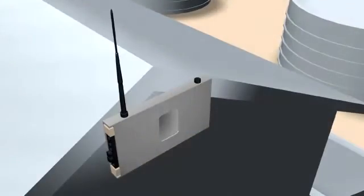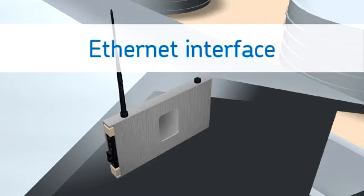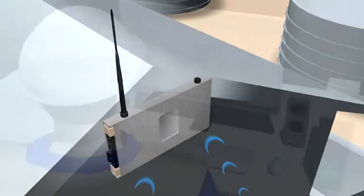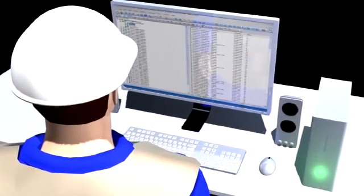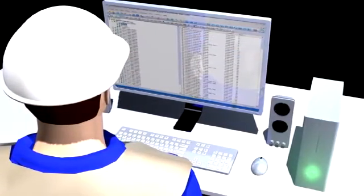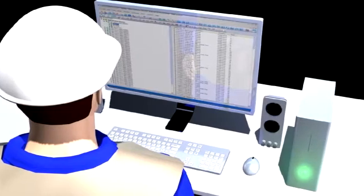The Wireless HART gateway communicates with your existing local area network using Ethernet. The data can be integrated into existing plant control systems and asset monitors.